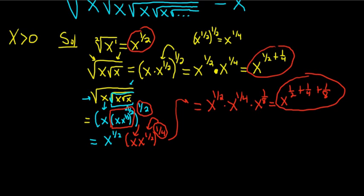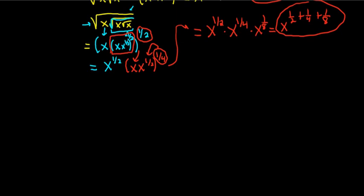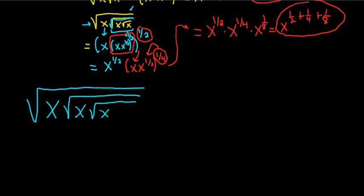So we have the square root, then we have x square root, x square root, x square root. I'll just put three little dots here just to indicate that the pattern continues. So this is going to be equal to, based off our work, x to the 1 half plus 1 fourth plus 1 eighth plus dot dot dot. So we have an infinite sum. This is an infinite geometric sum.